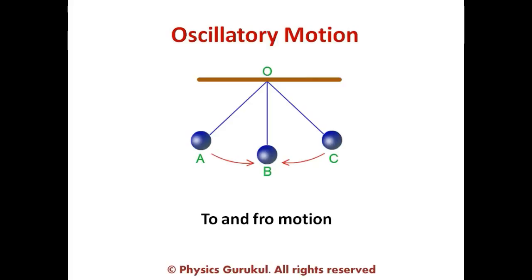So we call this to-and-fro motion. From B to C, the velocity direction is upward, and from C back to B it is downward — so the motion is to and fro. Such motion is called oscillatory motion. The motion of a simple pendulum is oscillatory in nature.